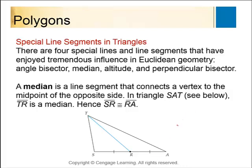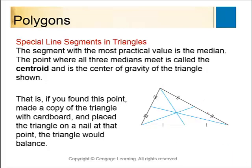A median is a special segment where you find the exact midpoint of one side of a triangle and draw a line from that midpoint to the opposite vertex. A really cool result: if you draw all three medians of a triangle, they meet at a single point called the centroid, which is the center of gravity. You can actually find the centroid and balance the triangle on your finger at that point — a fun activity to do with kids.